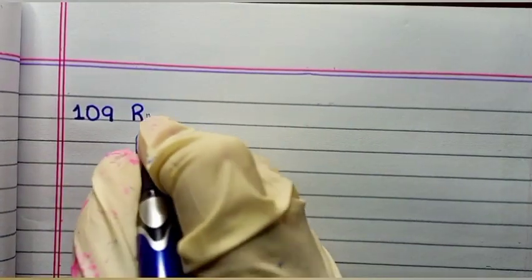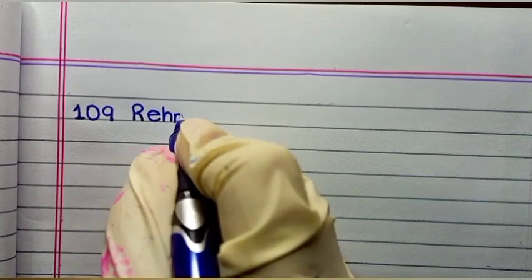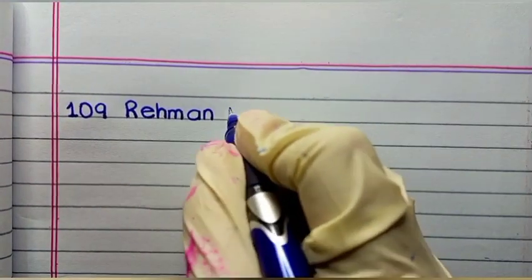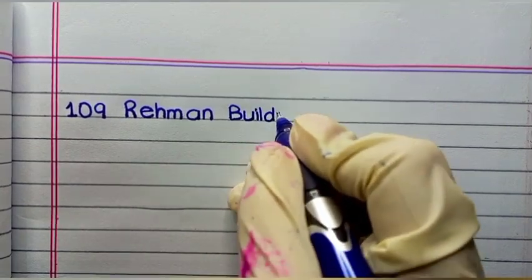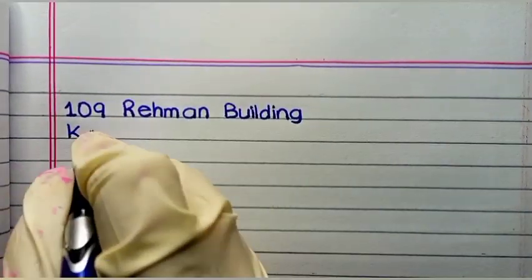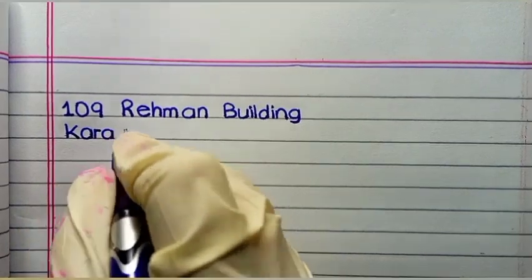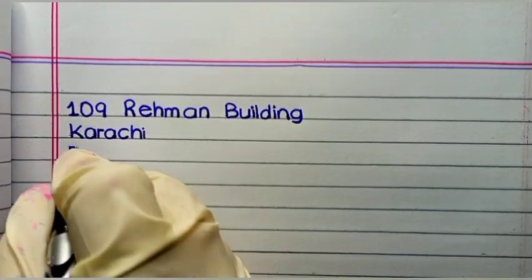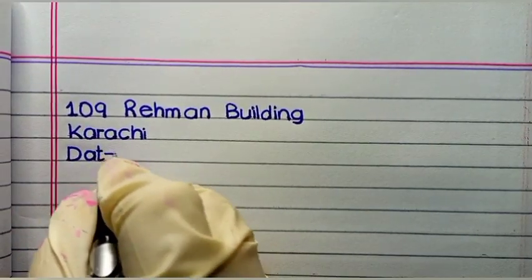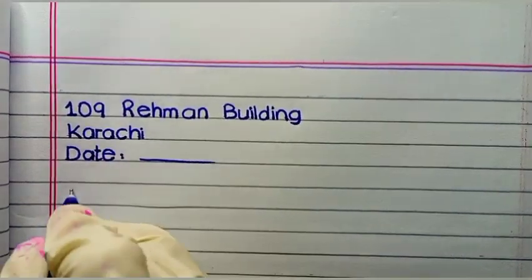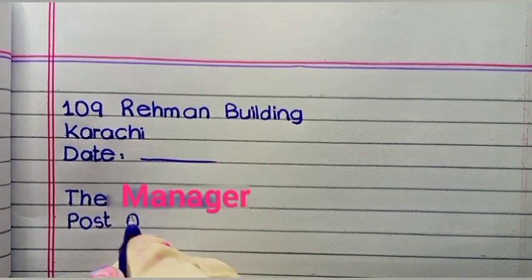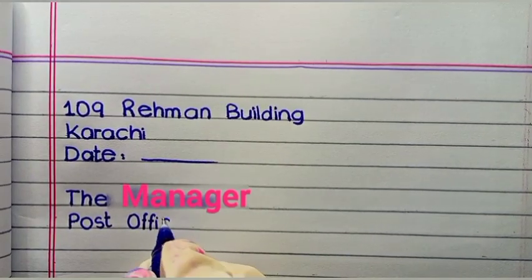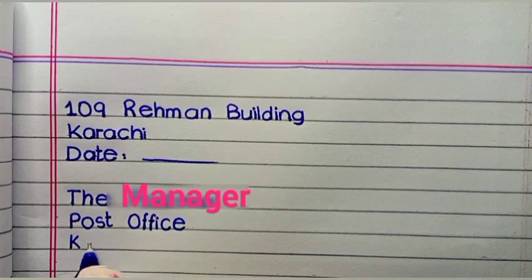Hello everyone. Today we will write a complaint letter to the postmaster. So let's start. 109 Rahman Building, Karachi. Date. The manager, Post Office, Karachi.